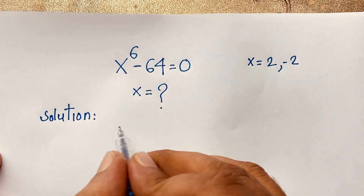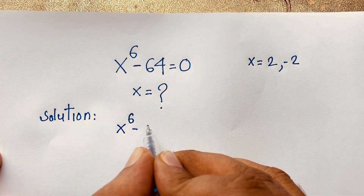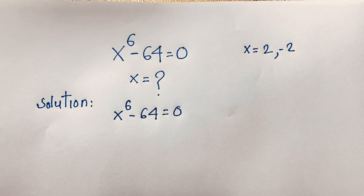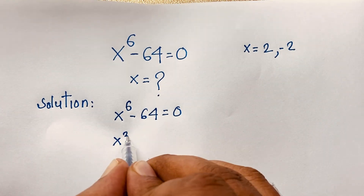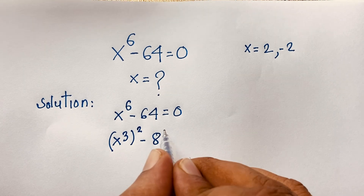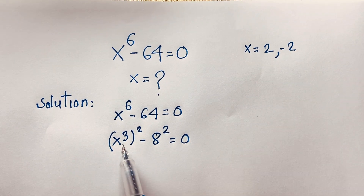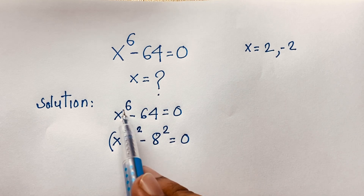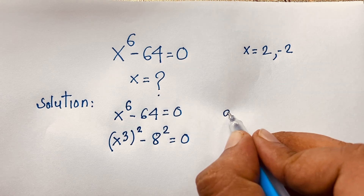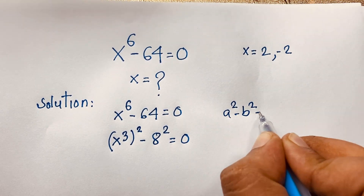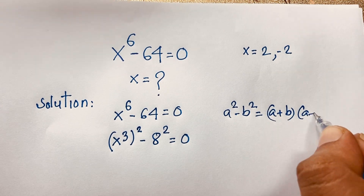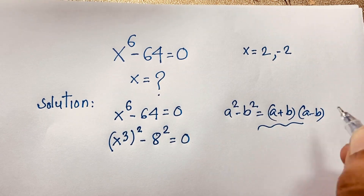Starting the solution: x to the power 6 minus 64 = 0. We can rewrite this as (x³)² minus 8² = 0, since 2×3 = 6 and 8² = 64. Now we apply the difference of squares formula: a² − b² = (a + b)(a − b).